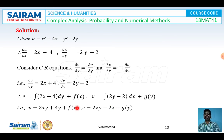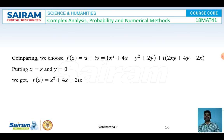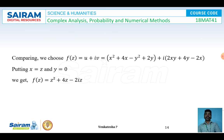Comparing both expressions, f(x) = -2x (the term free from y) and g(y) = 4y (the term free from x). So v = 2xy + 4y - 2x. Then f(z) = u + iv = (x² + 4x - y² + 2y) + i(2xy + 4y - 2x). Substituting x = z, y = 0: f(z) = z² + 4z - 2z = z² + 2z.